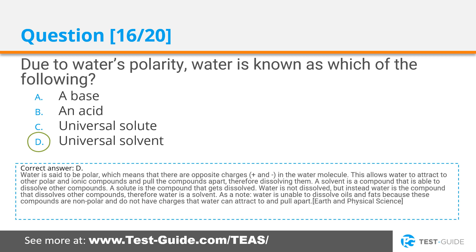Correct answer D. Water is said to be polar, which means that there are opposite charges — plus and minus — in the water molecule. This allows water to attract other polar and ionic compounds and pull the compounds apart, therefore dissolving them. A solvent is a compound that is able to dissolve other compounds; a solute is the compound that gets dissolved. Water is not dissolved — instead, water dissolves other compounds, therefore water is a solvent. As a note, water is unable to dissolve oils and fats because these compounds are nonpolar and do not have charges that water can attract to and pull apart.